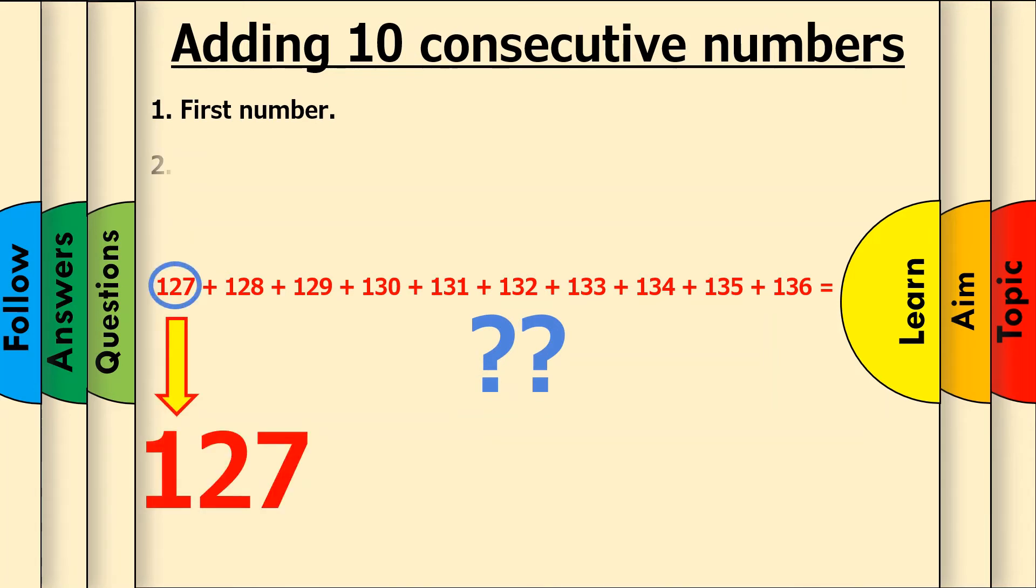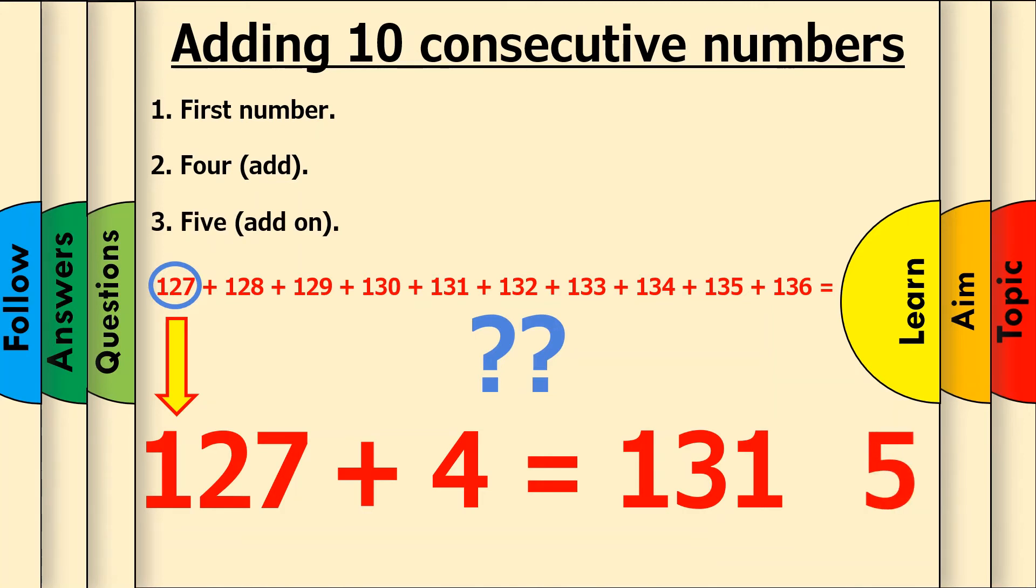Now, let's add 4 to this. 127 plus 4 equals 131. Now, let's just add on 5 at the end by sliding it on like this. Our answer is 1315.